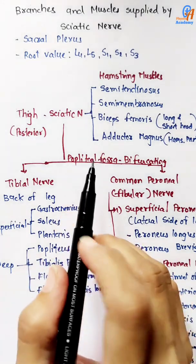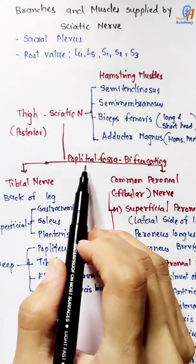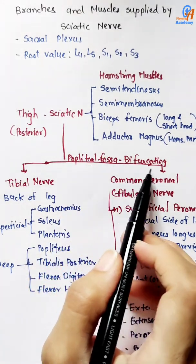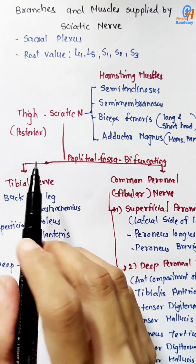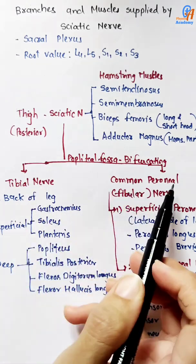Then the nerve comes down in the popliteal fossa by bifurcating into two branches: the tibial nerve and the common peroneal nerve.